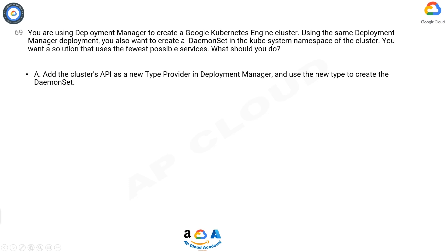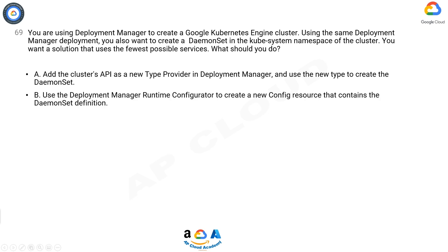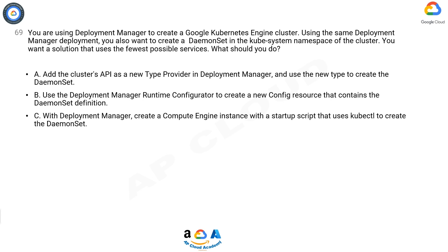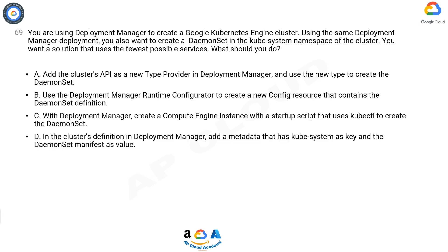Option B: Use the Deployment Manager Runtime Configurator to create a new config resource that contains the DaemonSet definition. Option C: With Deployment Manager, create a Compute Engine instance with a startup script that uses kubectl to create the DaemonSet. Option D: In the cluster's definition in Deployment Manager, add a metadata entry that has kube-system as the key and the DaemonSet manifest as the value.